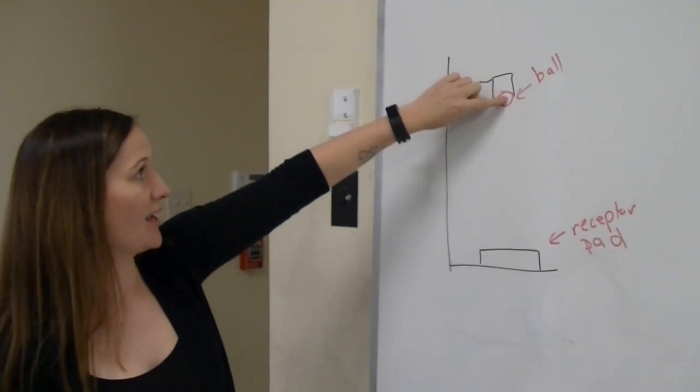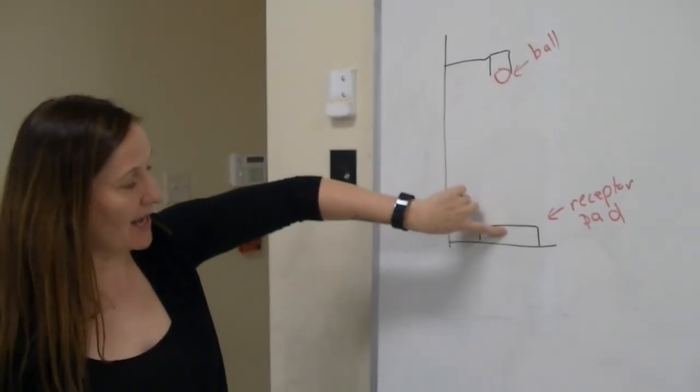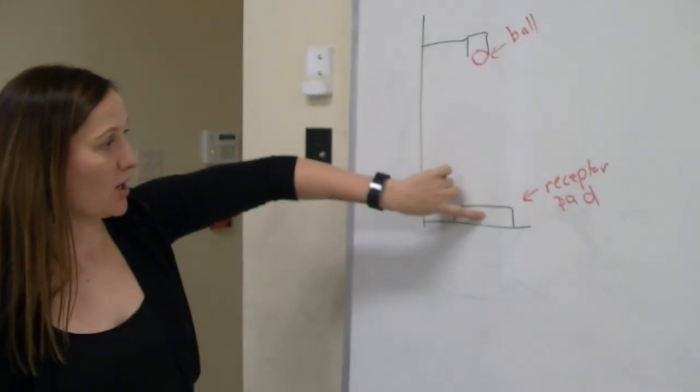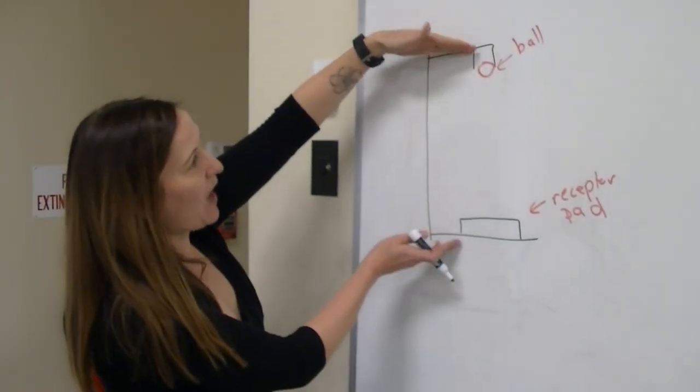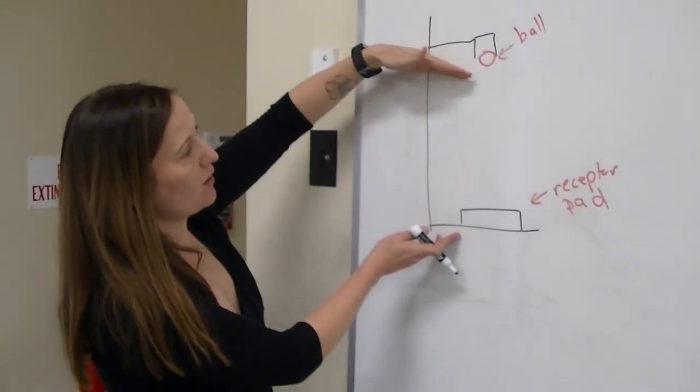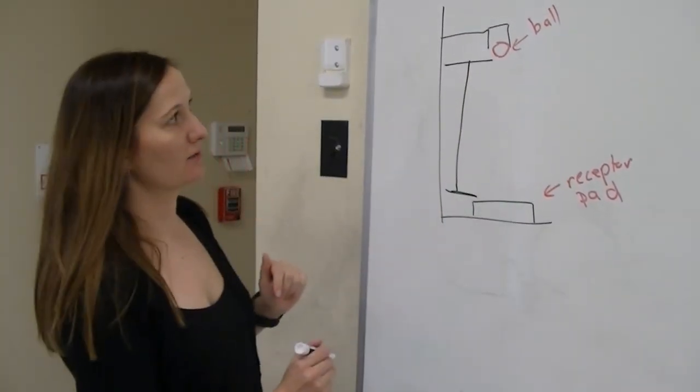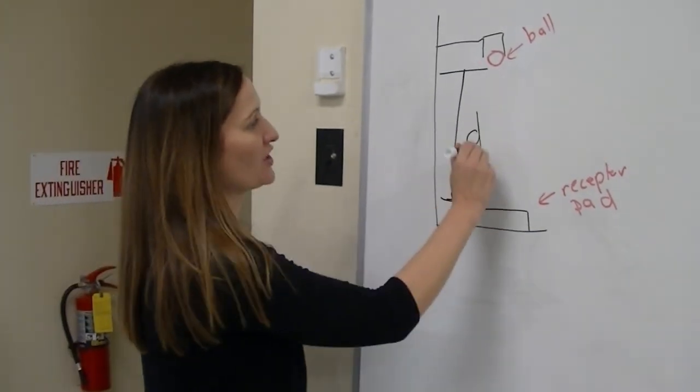It is then going to hit a receptor pad on the floor, and once it hits that pad, the timer is going to stop. So what we're doing is we're timing how long it takes the ball to fall from this distance down to when it hits the receptor pad. This is going to be our D.